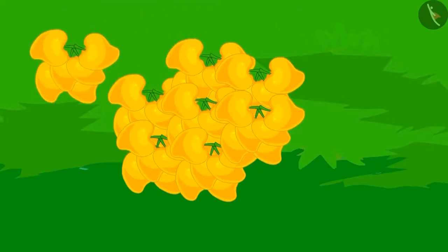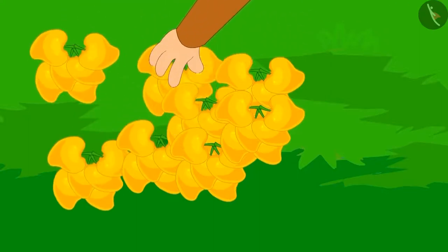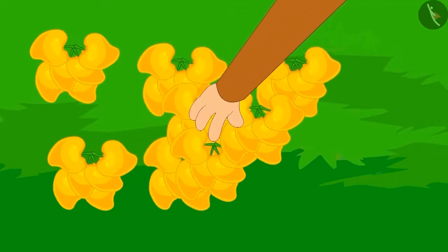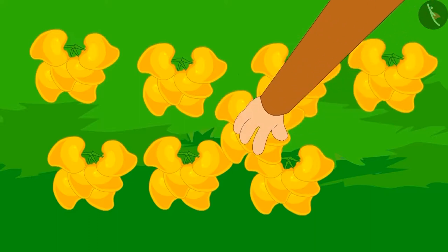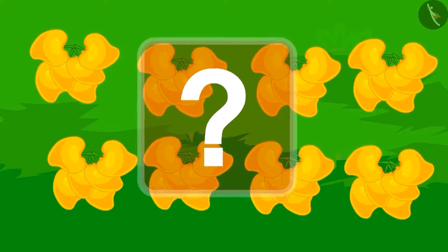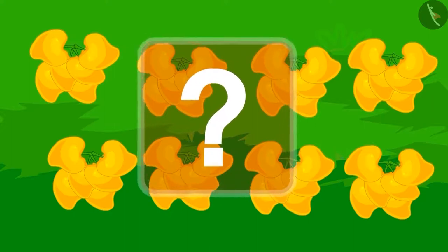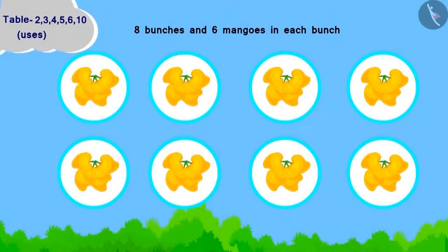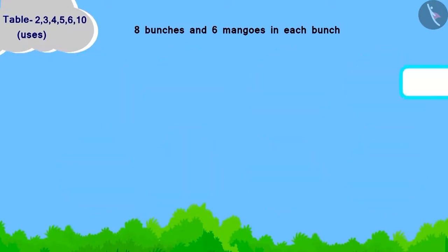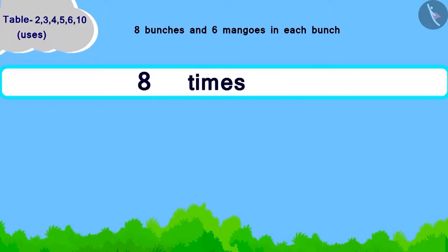Chanda filled twelve bananas in a basket and started walking in her garden. Chanda collected a lot of mangoes from her mango tree and tied them in bunches of six mangoes each. Can you tell how many mangoes has Chanda collected in total? Chanda has got eight bunches and every bunch has six mangoes in it. How will we write this? Eight times six.